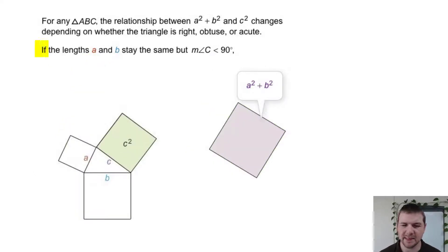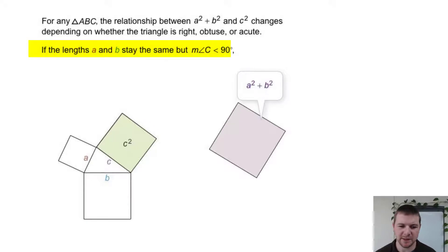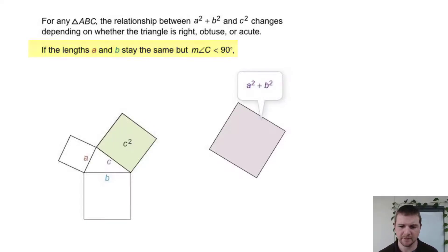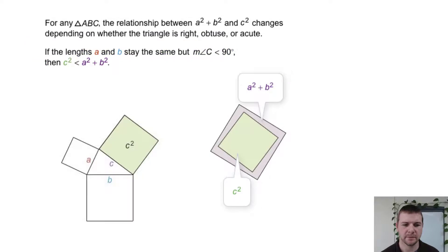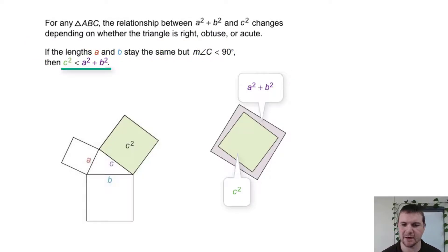Now, if A and B stay the same, but the measure of angle C decreases to become less than 90 degrees, then C squared is less than the sum of A squared and B squared.